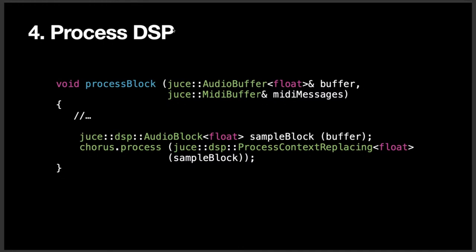From there, we're ready to go to our process block. The process block is where your audio is actually processing your input and output — it's the main guts of the audio for your plugin. What we have is an AudioBuffer responsible for outputting the audio. We create a sample block which is a reference to our buffer. Then we process the audio through the chorus effect. When it says `chorus.process` with `processContextReplacing`, what that means is that all of your audio is being processed through this chorus plugin and is actually replacing what's in your buffer — and that's what you're hearing through the output. That's how a widget works.